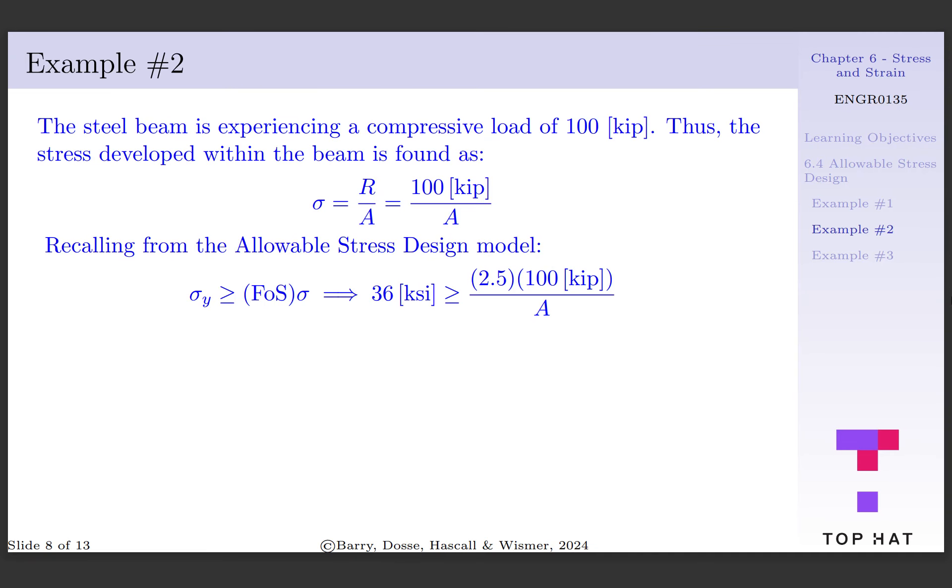The yield stress must be greater than or equal to the factor of safety times the stress in the beam. Therefore, the yield stress of 36 ksi will be greater than or equal to our factor of safety of 2.5 times the applied load of 100 kip per the area. Solving for A, we get that the cross-sectional area must be greater than or equal to 6.92 square inches.